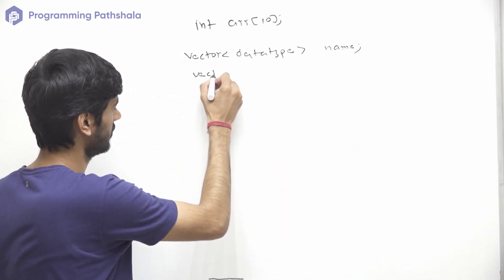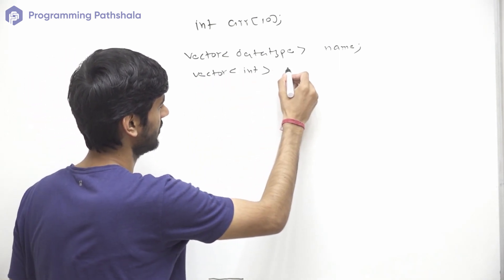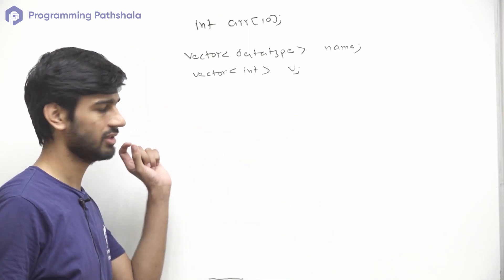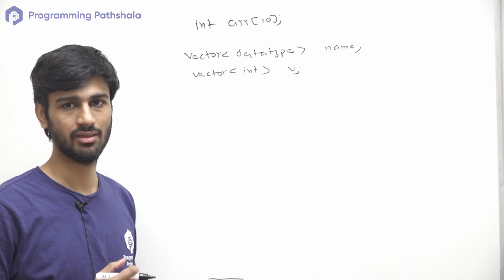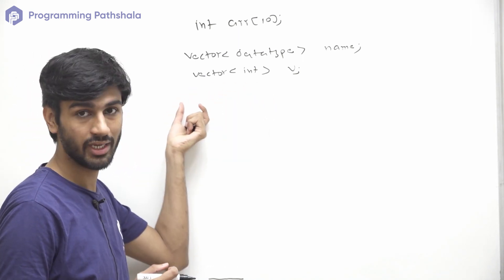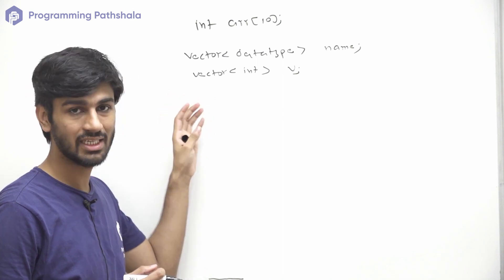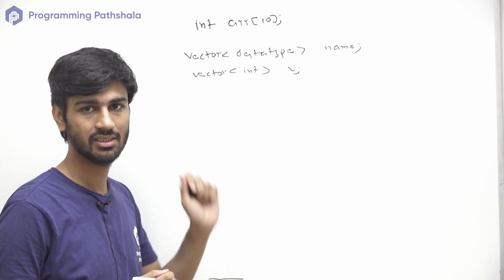Let's say we want to initialize a vector which can store integers and let's say the name of that is v. So this is a vector. Now there are three mostly used constructors while initializing a vector. One of them is this.